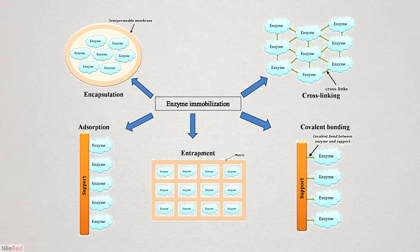There are a lot of ways to fix an enzyme to a solid support, but I figured the easiest way to do it here was to just entrap it in some calcium alginate jelly.